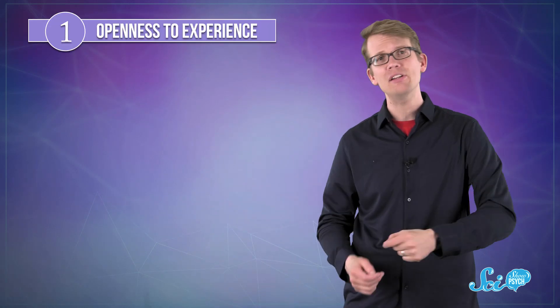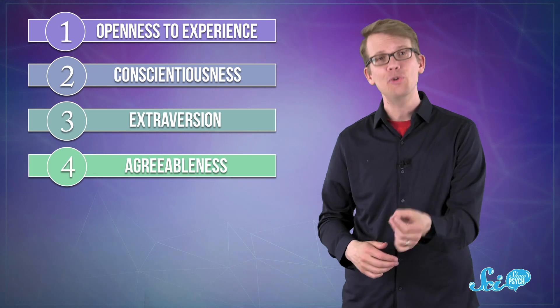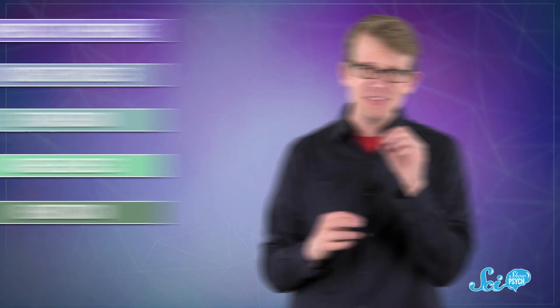Openness to experience, conscientiousness, extroversion, agreeableness, and neuroticism. Based on a handful of early studies, some psychologists are pretty convinced that you can connect birth order to specific big five traits.